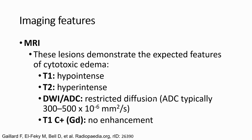On MRI, these lesions demonstrate expected features: on T1, hypointense signal; on T2, hyperintense signal; on DWI and ADC, restricted diffusion with ADC values around 300 to 1,500 × 10⁻⁶ mm²/s; and on T1 post-contrast, no enhancement.